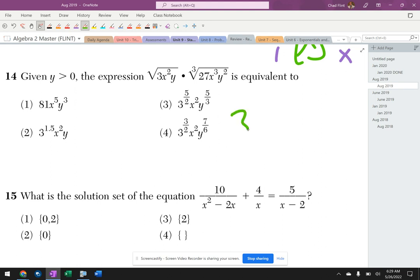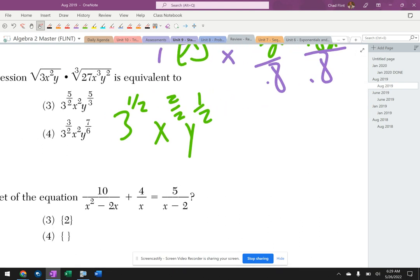All right, so the first one is going to be 3 to the 1/2, x to the 2/2, y to the 1/2. And the second thing is going to be times 27 to the 1/3, x to the 3/3, y to the 2/3.